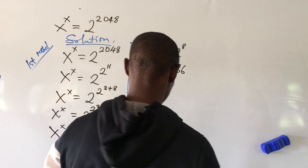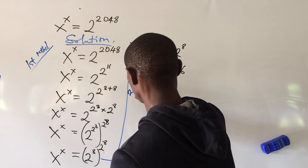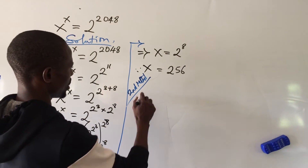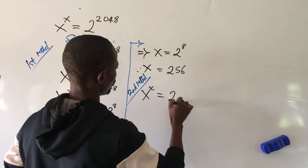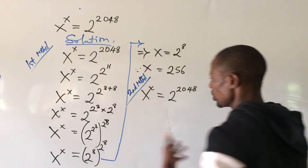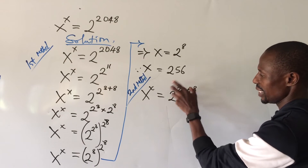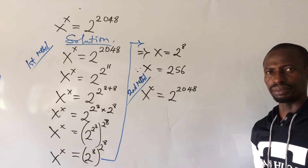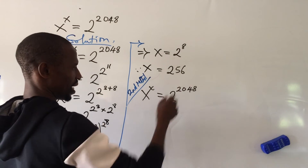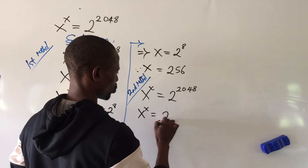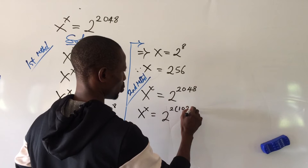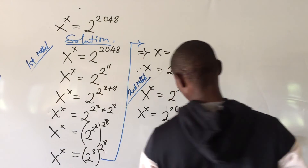Let's take the second method. We bring down our question: x^x = 2^2048. We keep in mind what we can put on the left-hand side raised to itself. So we start dividing the exponent down. Using 2 to divide, this expression becomes x^x = 2^2 × 1024.